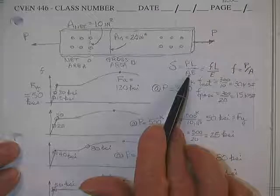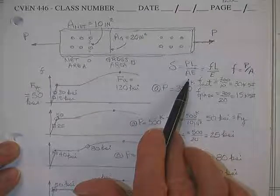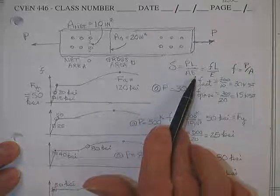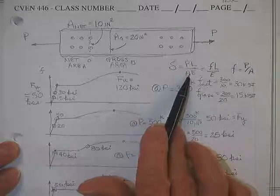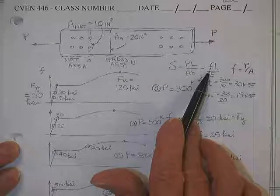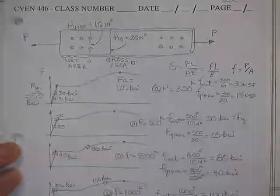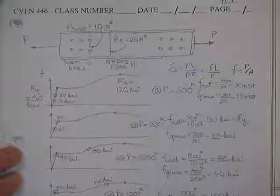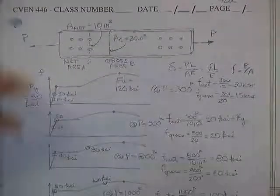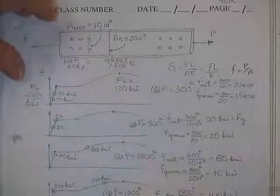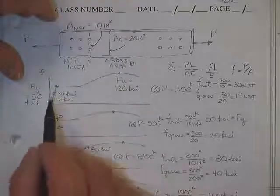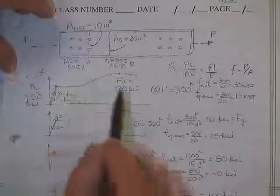This says delta is equal to P L over A E. Sigma is P over A. So I just replace it with what we're using for sigma. Too late to never mind. What do you mean never mind? You got to ask questions if you don't understand or you won't get anywhere.